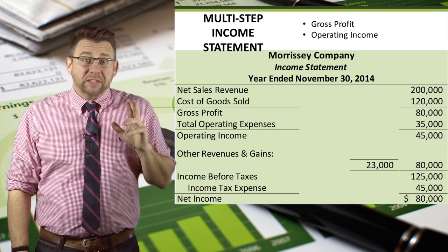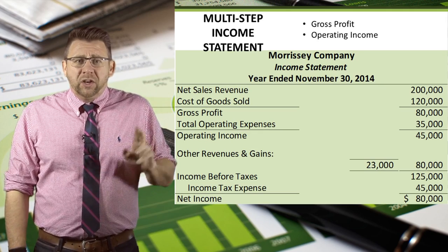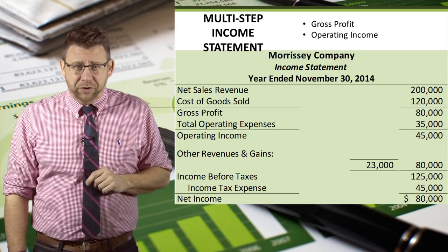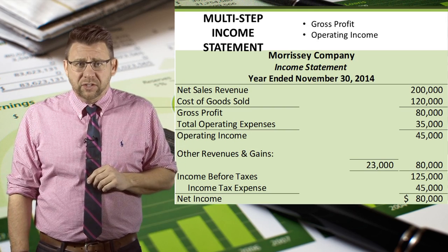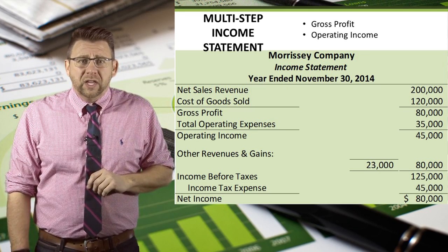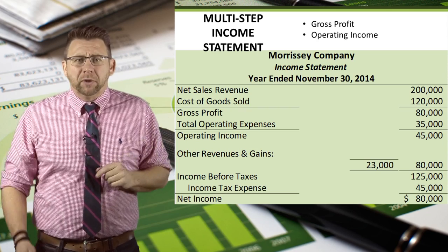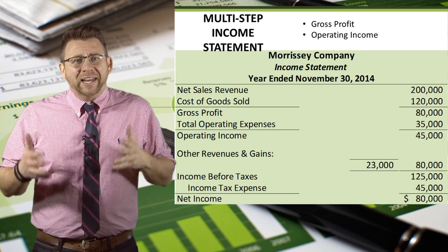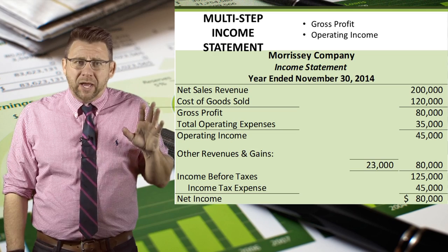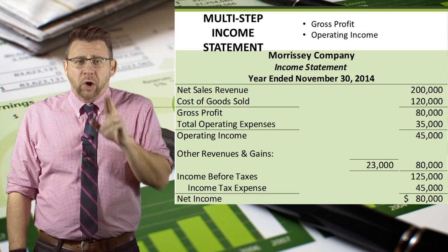The multi-step format gives us better information about gross profit and operating income. That is why non-service firms use this format. Notice that although the company had $80,000 of net income from $200,000 of net sales revenue, operating income was only $45,000. In fact, $80,000 net came from the non-operating section — specifically a $100,000 gain on the sale of land. How repeatable is that? They can't just sell land at a profit each year into perpetuity. That's why the multi-step format breaks out the different types of account data so investors and creditors can make more informed and better decisions.